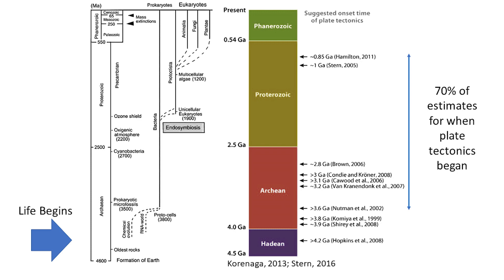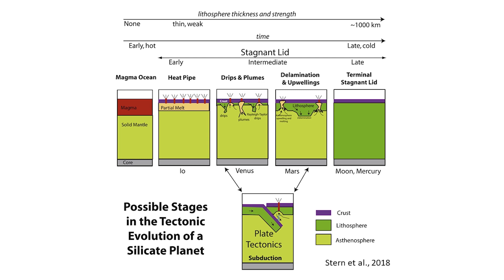What was Earth's tectonic style before plate tectonics started? It was almost certainly some kind of stagnant lid tectonics. This is an unfortunate term because stagnation implies that nothing is happening — think of a stagnant career, a stagnant economy, or a stagnant relationship. But that's not true for tectonically active silicate bodies with stagnant lid tectonics. Some silicate bodies with stagnant lid tectonics can be tectonically dead, like the Moon or Mercury, but others are very active, like Venus. We think it is better to use a more generic term, single lid tectonics, that includes both rigid, non-deformable lid and squishy, tectonomagmatically active lid.